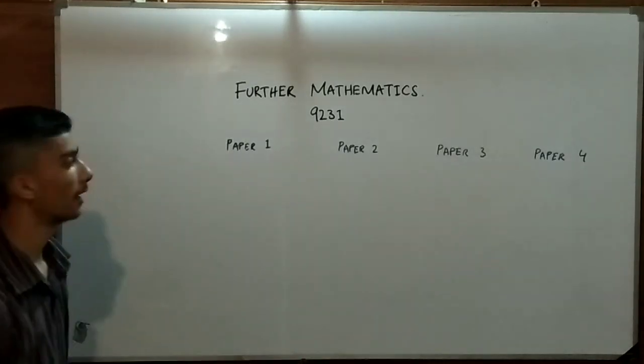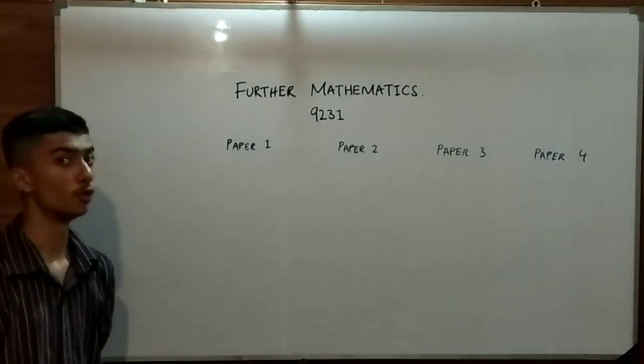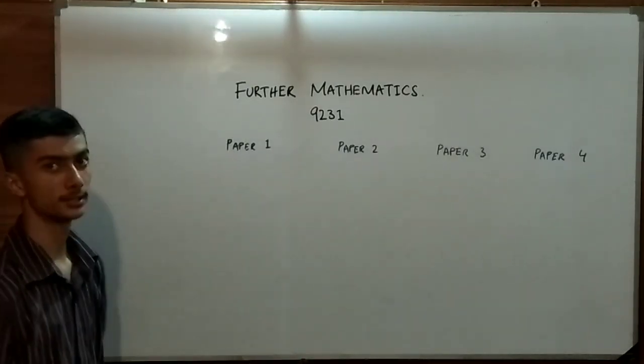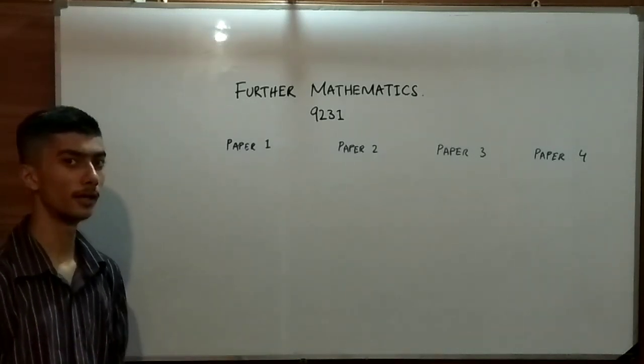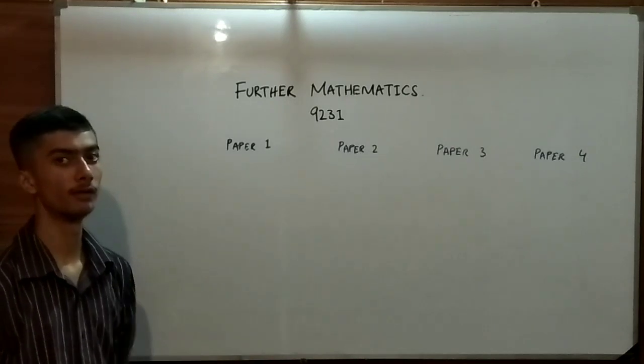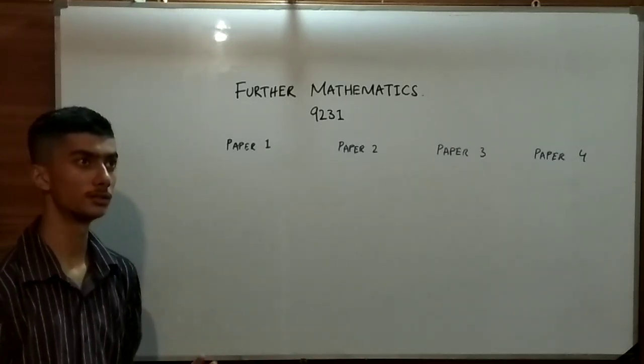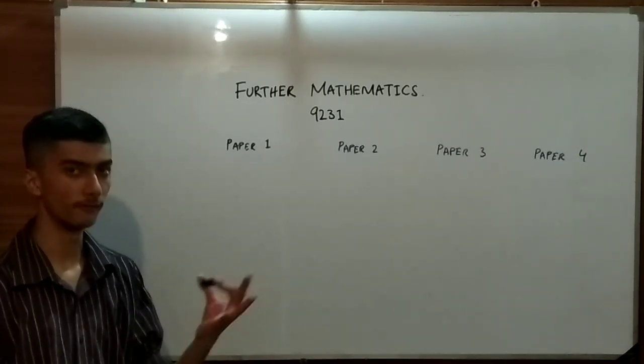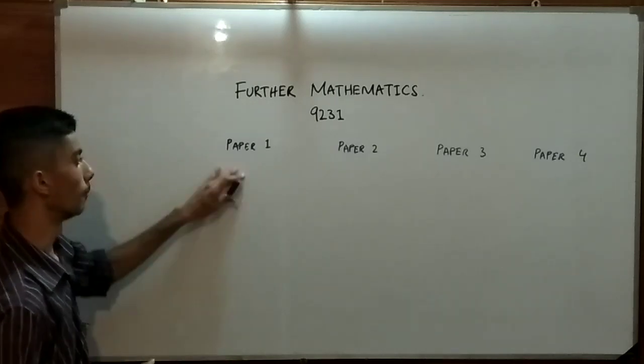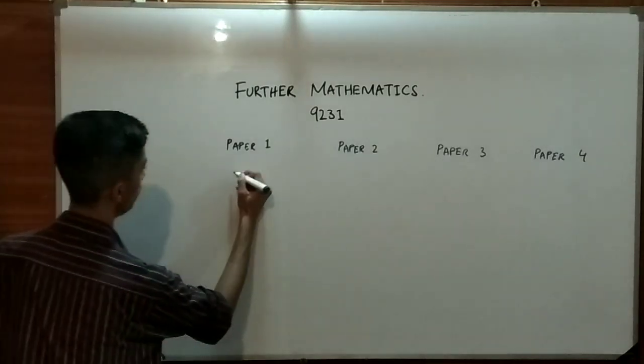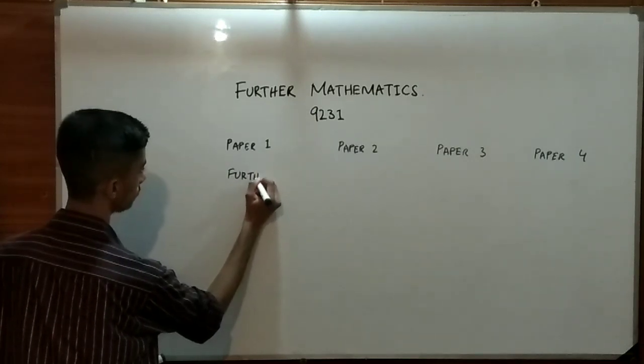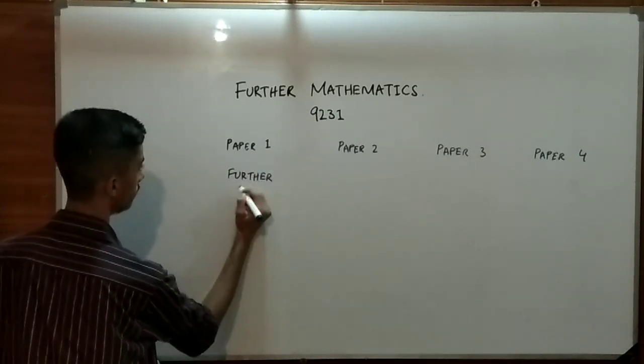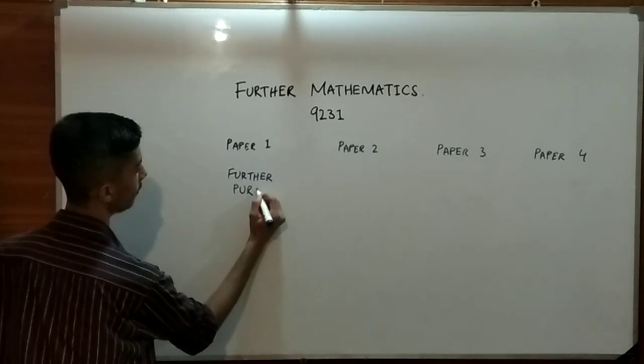From May to June 2020 you have an option to do AS separately and A-levels separately. Before 2020 we had a combined A-level which was very much difficult for many students to go through it with the whole paper. Paper 1 is known as further pure mathematics.